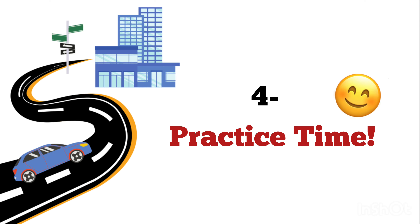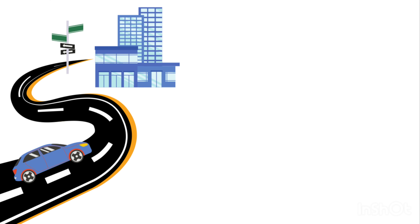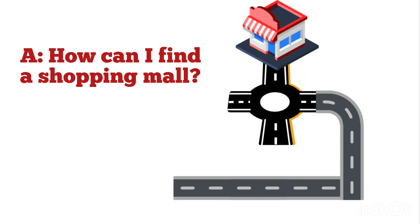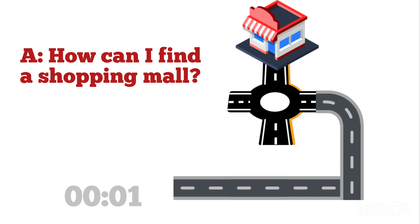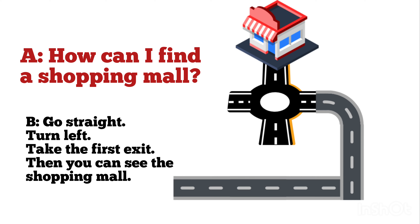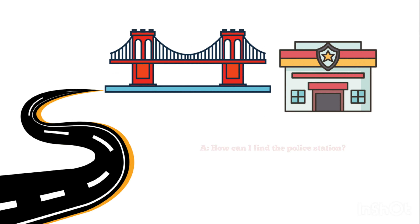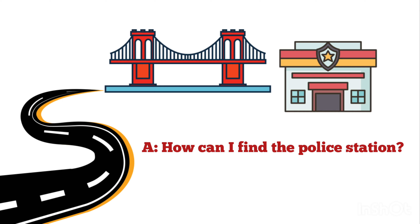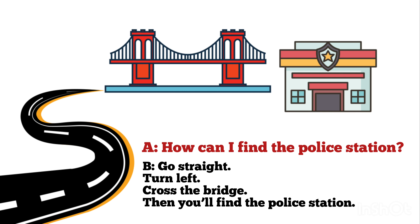It's practice time — let's practice this lesson together. The first practice: how can I find the shopping mall? You have 5 seconds to answer. You can say: go straight, turn left, and take the first exit, and you will find the shopping mall. What about the second one? How can I find the police station? You can say: go straight, turn left, and cross the bridge, then you can find the police station.